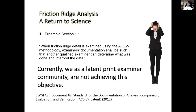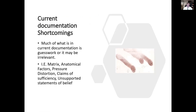Back in 2012, SWIGFAST — the body at the time offering guidance to latent print examiners — came out with Document Number Eight: essentially the standards for documentation of ACE-V. The very first thing they say is that when friction ridge detail is examined using the ACE-V methodology, examiners' documentation shall be such that another qualified examiner can determine what was done and interpret the data. In other words, they should be able to receive your report, look at it, and go through the entire ACE-V process to determine whether it meets or exceeds expectations.